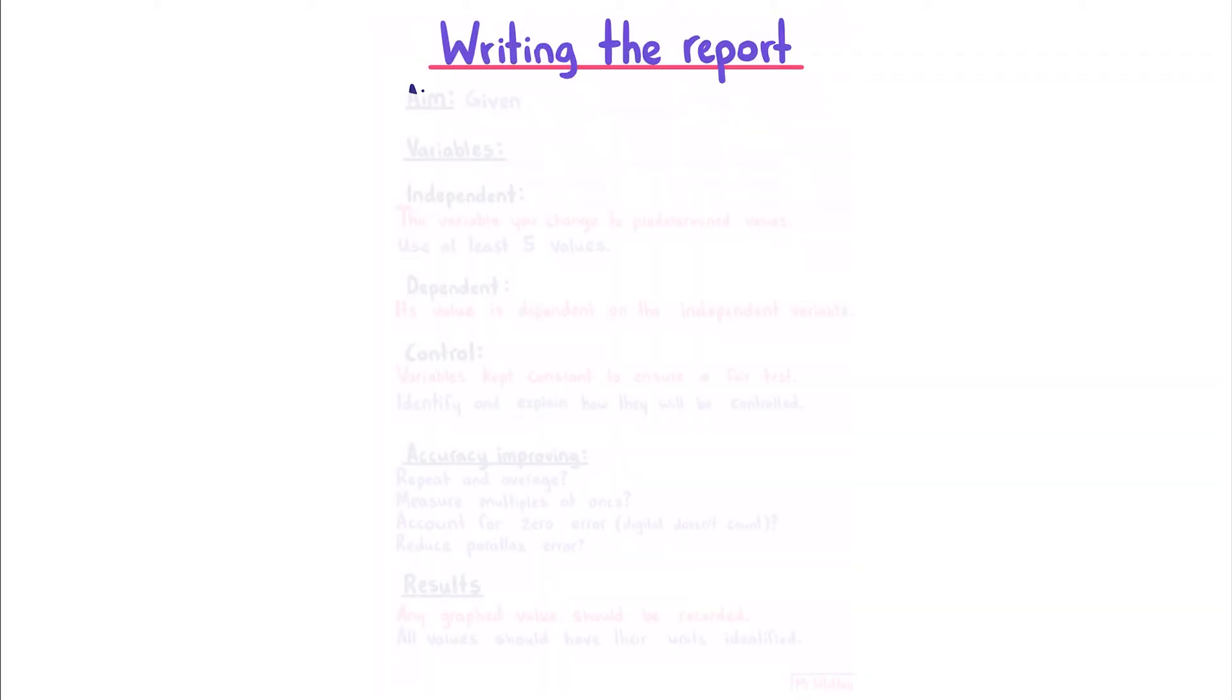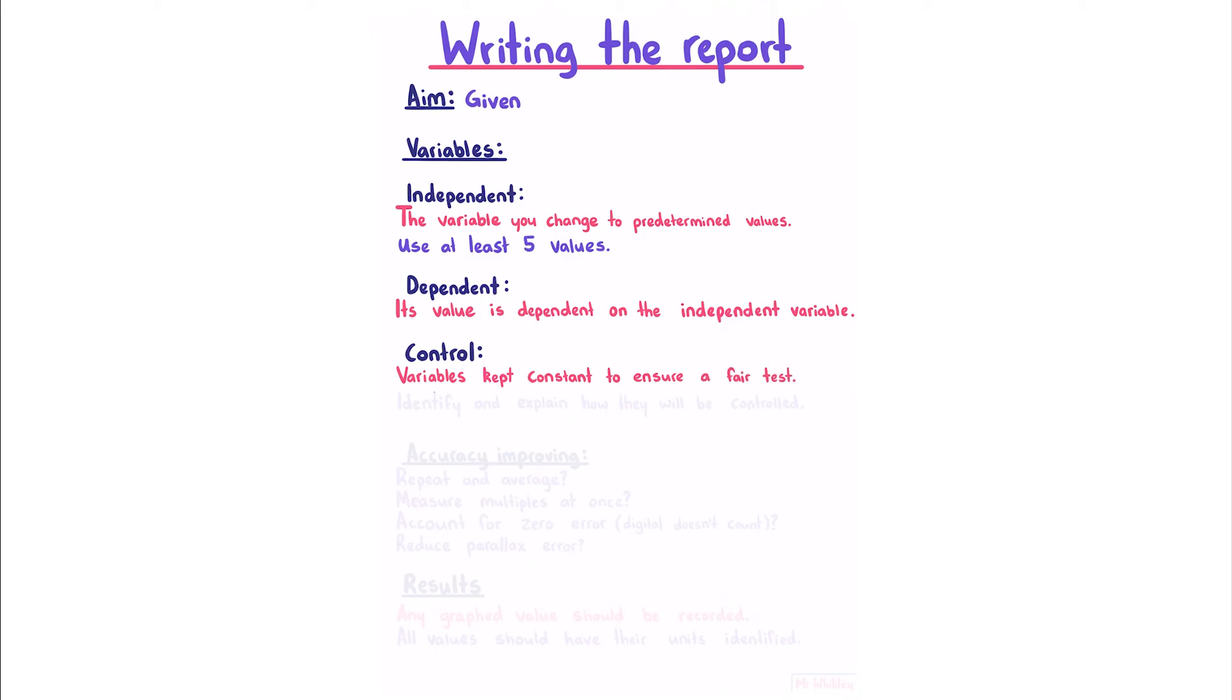Writing the report. From here on out, I'm going to give you some guidance as to what the assessment for this standard might entail, however bear in mind there will be some variations school to school, and your own teacher's instructions should take priority over anything I say here. In this assessment you'll be given an experiment with an aim that will be given, one of your first steps should be to figure out your variables. Your independent variable is the variable you change to predetermined values, meaning that you know before the experiment what these values are going to be. The standard requires that you use at least 5. The dependent variable has a value that's dependent on the independent variable, and is the one that you're recording in your table. Control variables are variables that are kept constant to ensure a fair test. In your report you should identify and explain how they will be controlled.